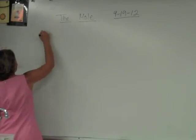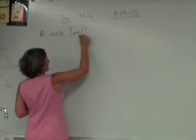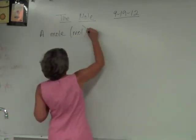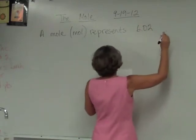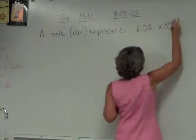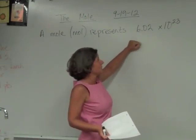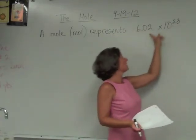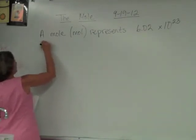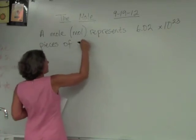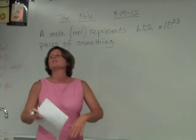A mole — and we abbreviate it 'mol' — represents 6.02 times 10 to the 23rd. Get that, people? Expand the scientific notation — that's 21 zeros. That's a lot. 6.02 times 10 to the 23rd pieces of something. That's a mole.